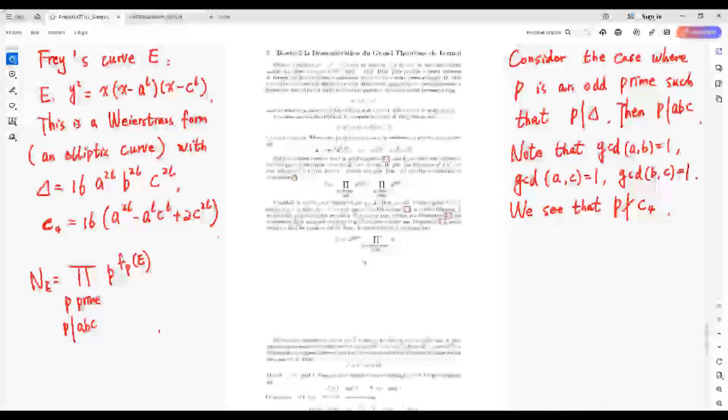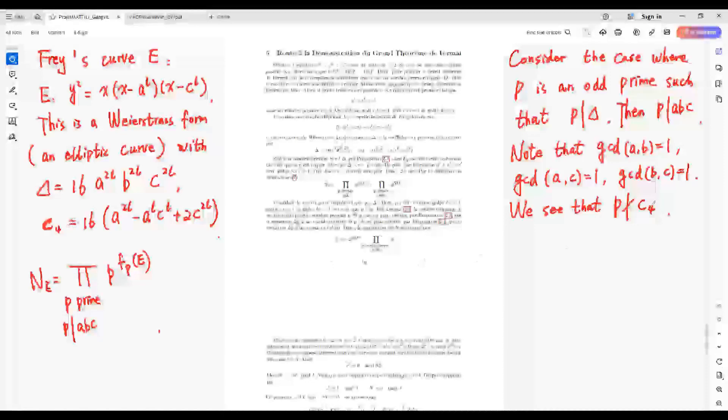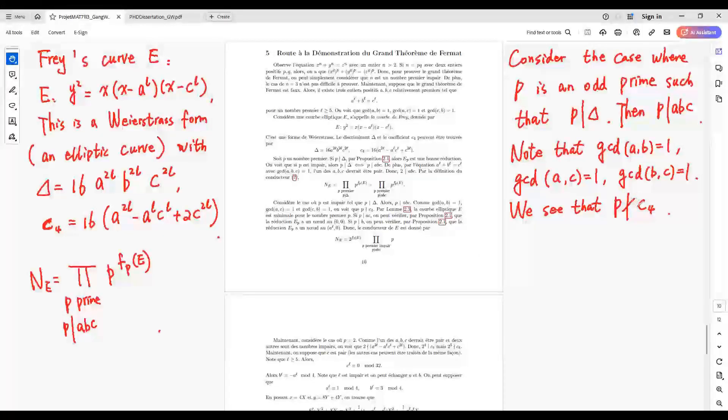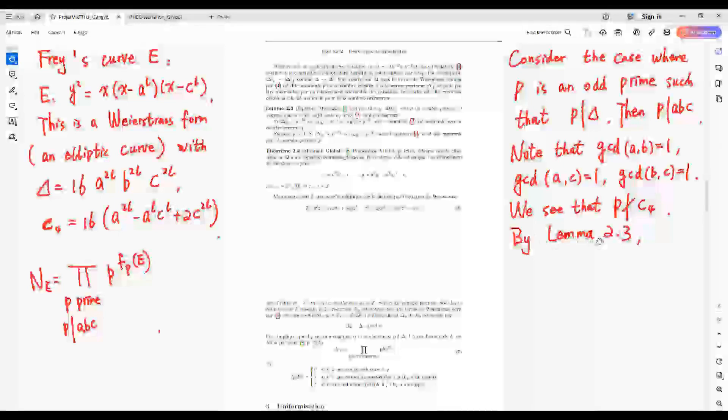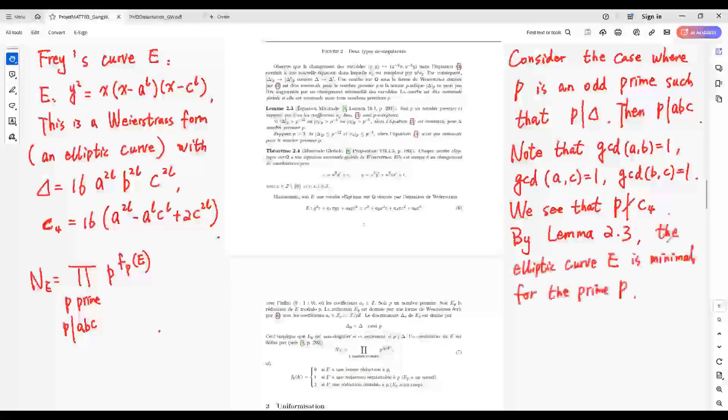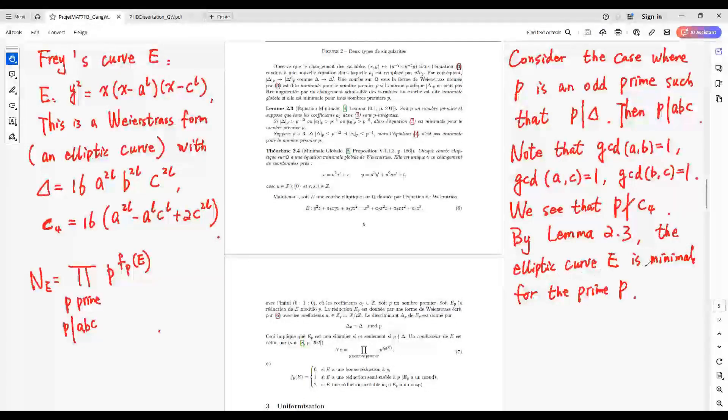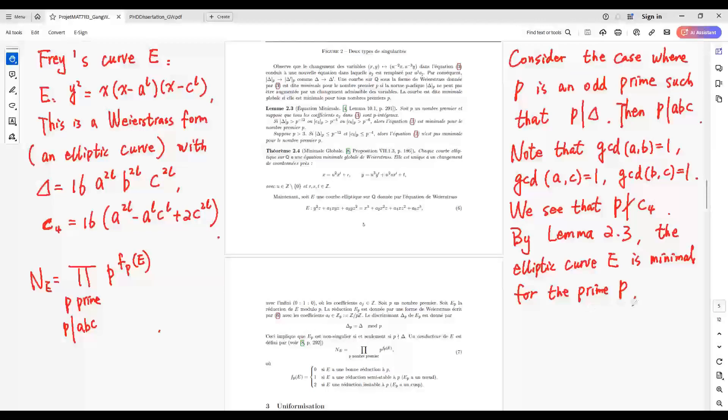We see that by the C4 here, C4 is not divisible by P. By Lemma 2.3 here, the elliptic curve is minimal for the prime number P.